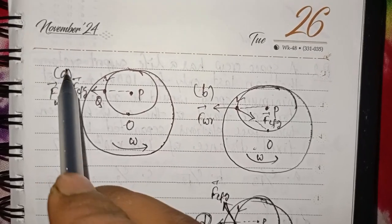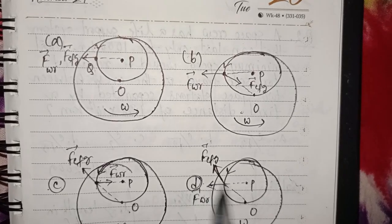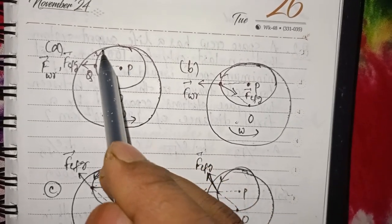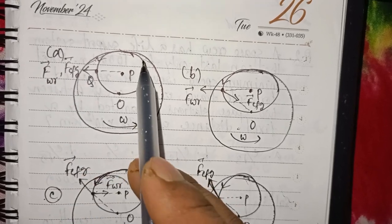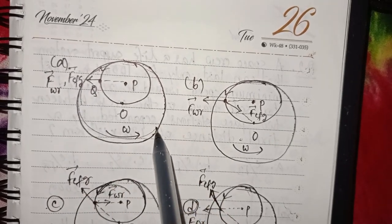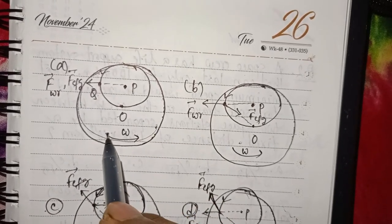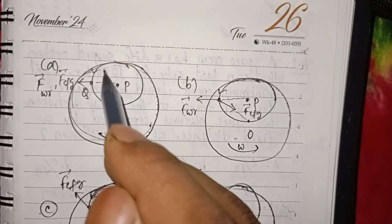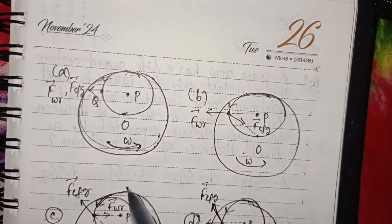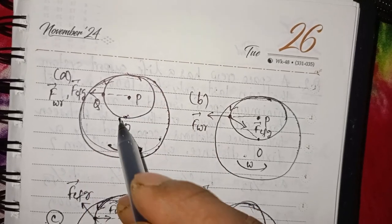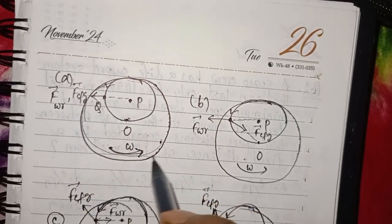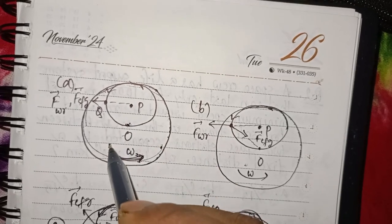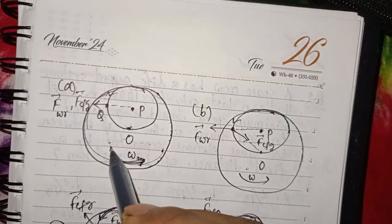There are four options: A, B, C, and D. Which option is correct? This disk is rotated at angular velocity omega. This is the center and the center axis. This is the reference frame I will observe.